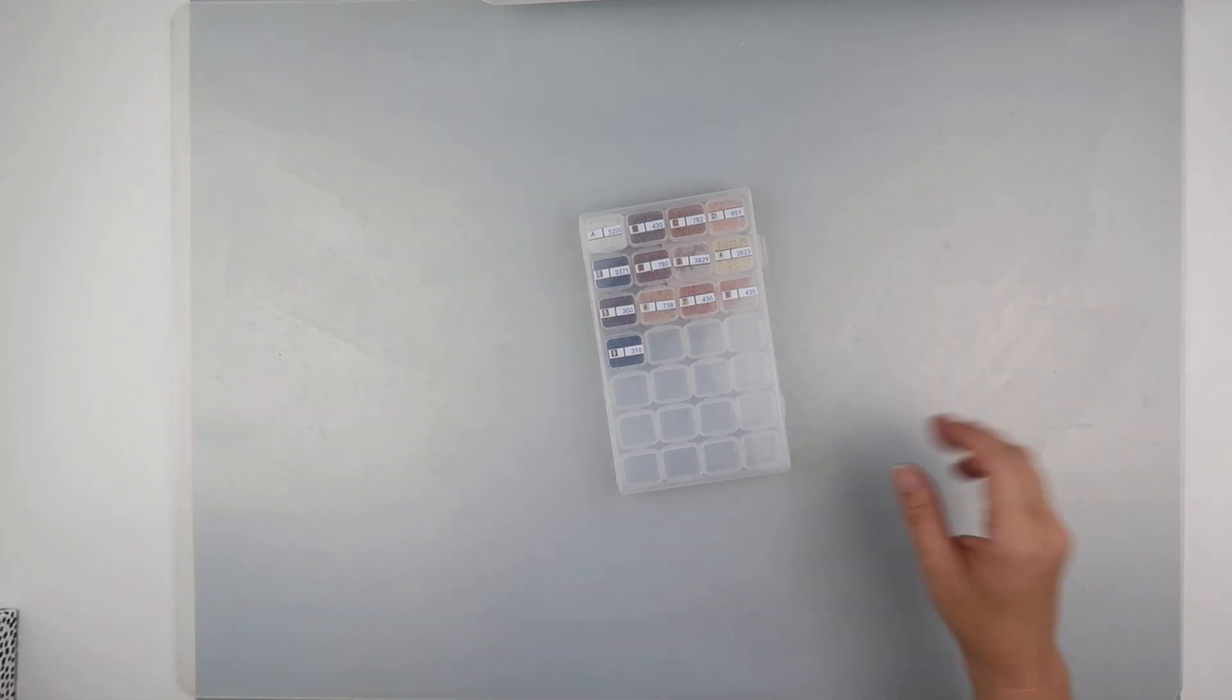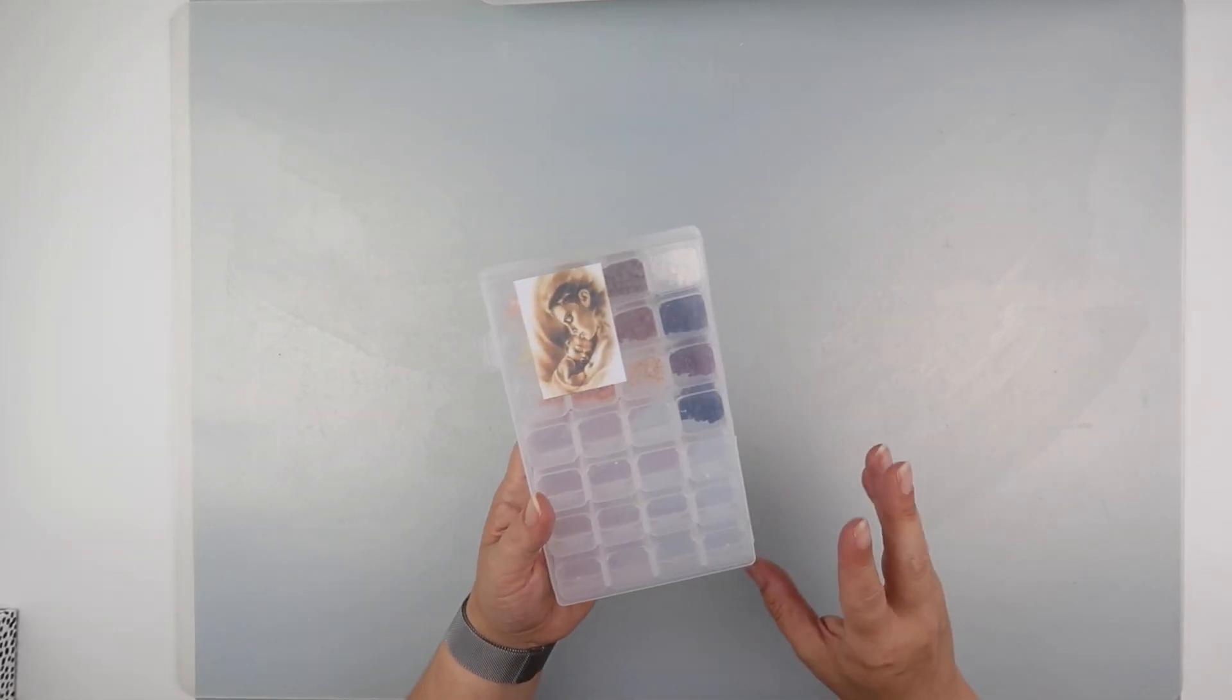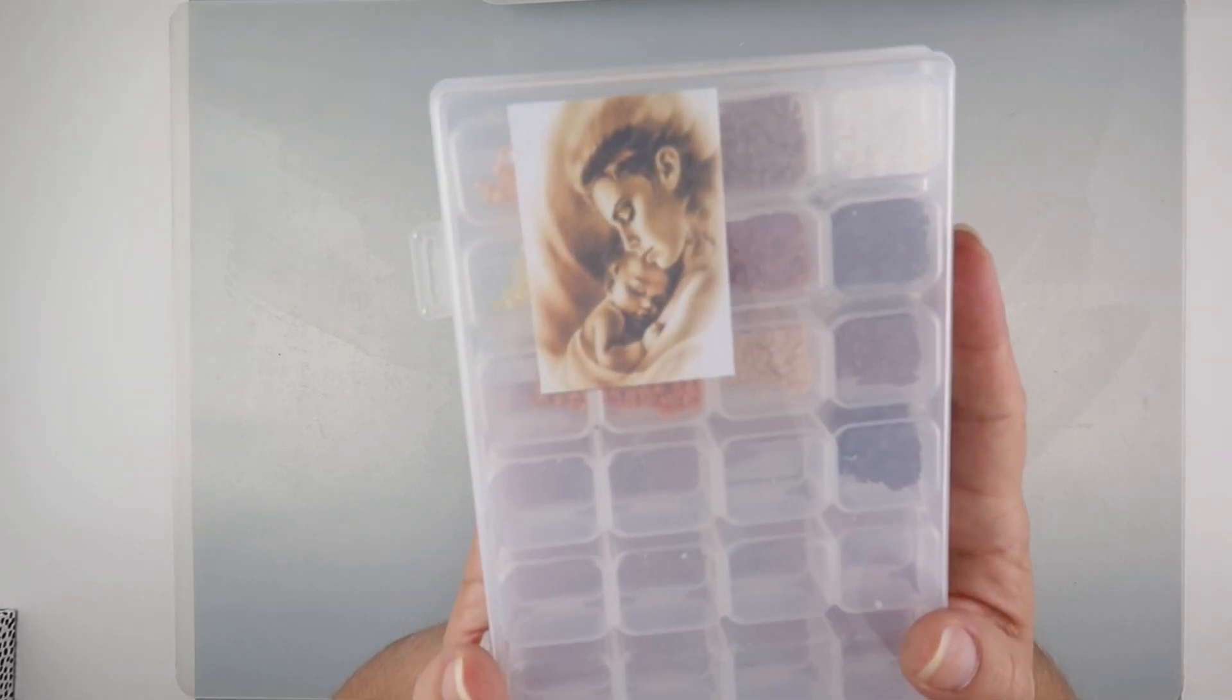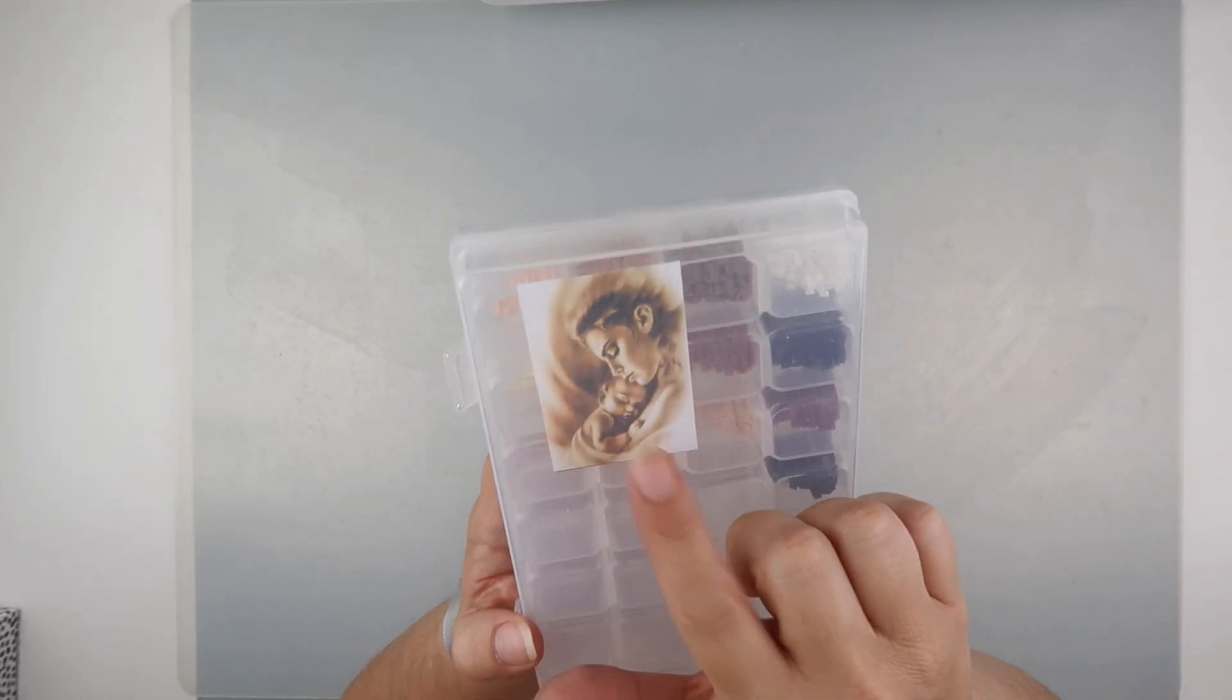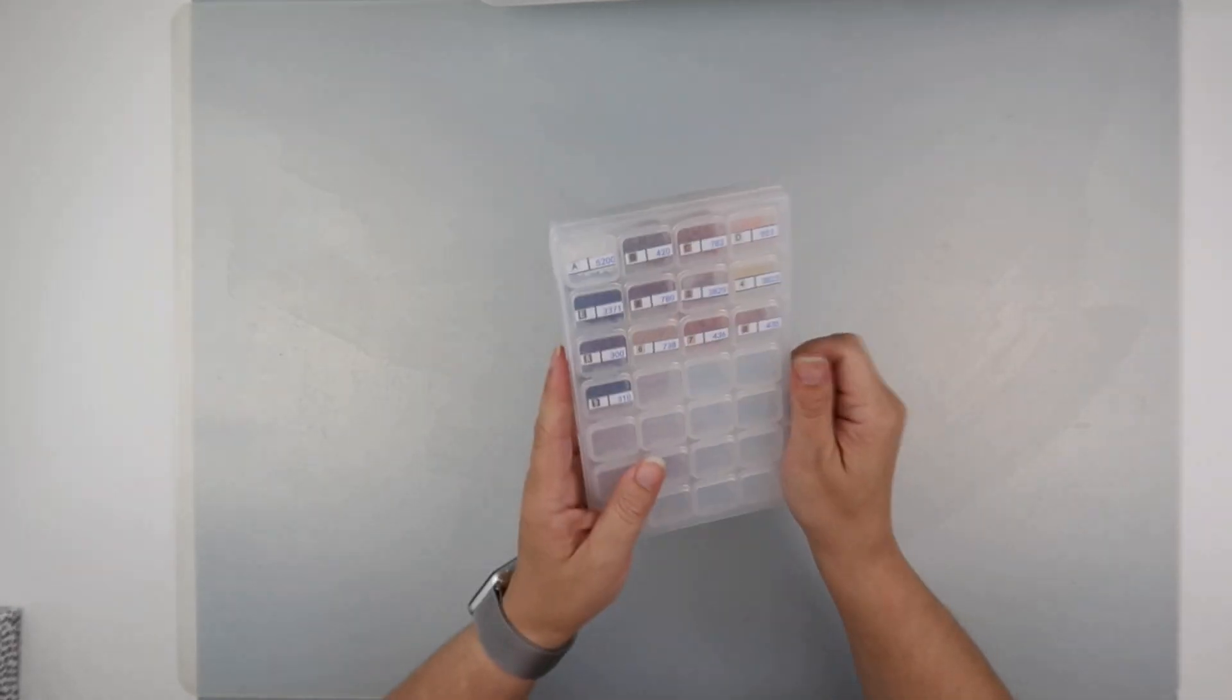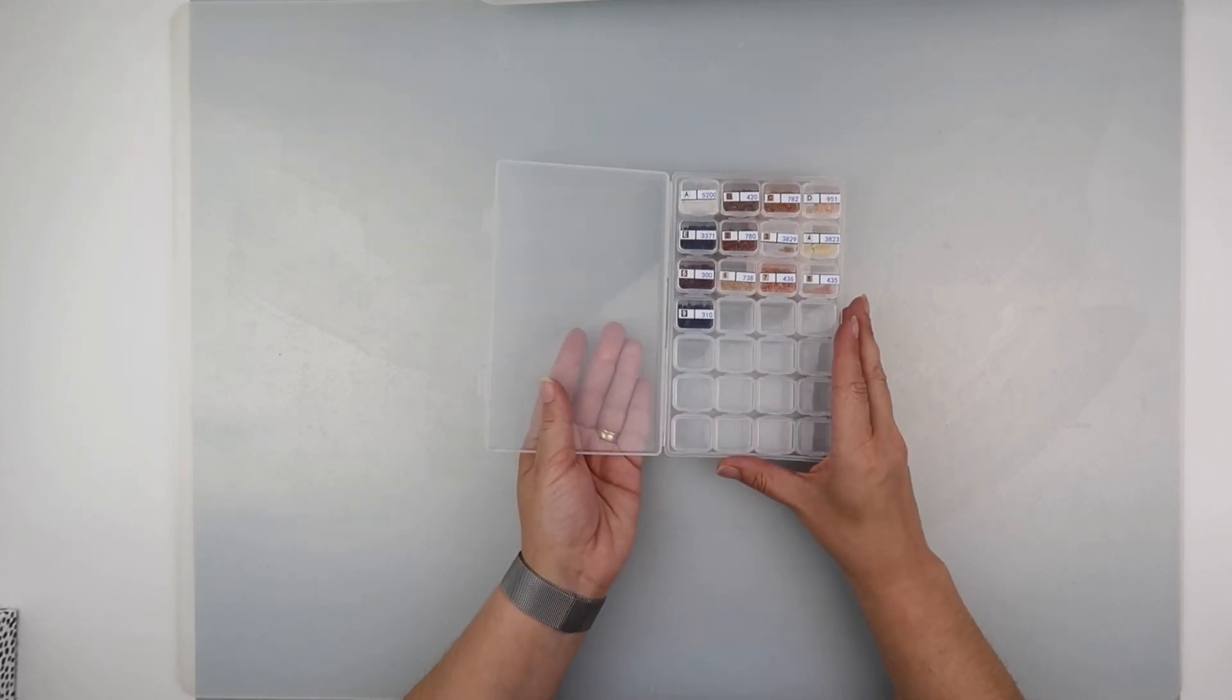Hi and welcome to my channel. It's Rebecca, also known as 4kidsat147, and it's time to de-kit my Mother and Baby. So this is one of the small 15 by 20 paintings that I did that I got from Homfun.